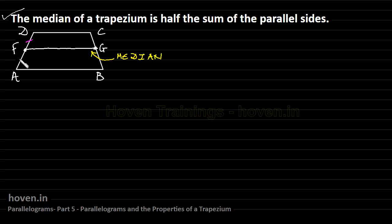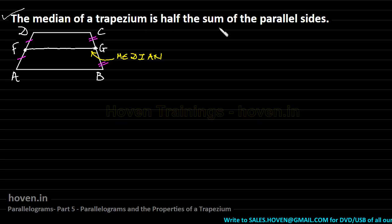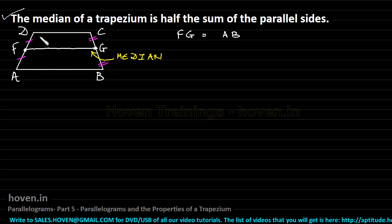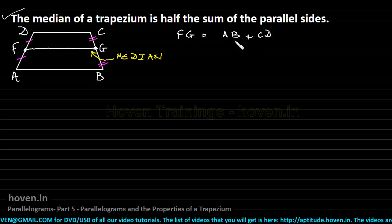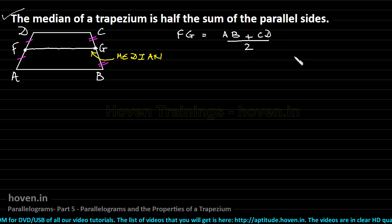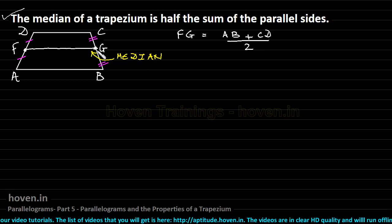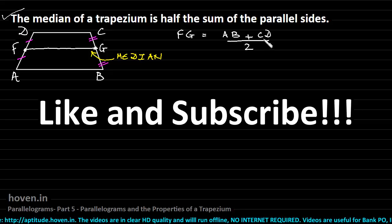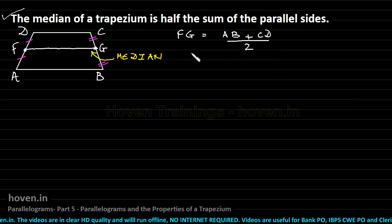We can mark equal segments on both non-parallel sides. The property is that the length FG equals the parallel side AB plus the opposite parallel side CD, divided by 2. That is, the length of the median is the average of the lengths of AB and CD. This is a property of a trapezium.